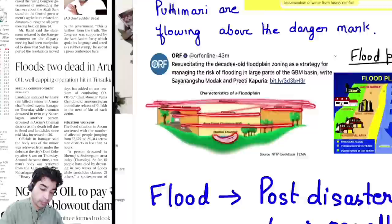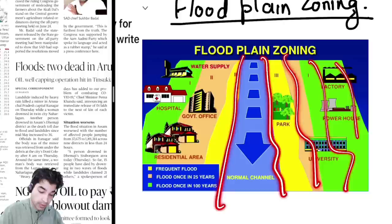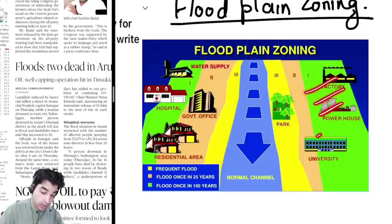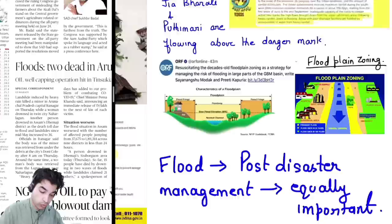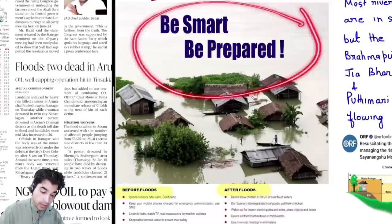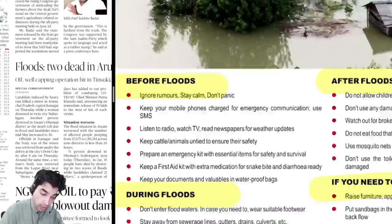The flood plain consists of the normal channel, base flood elevation, the floodway, and the flood fringe — all together forming the flood plain. Flood plain zoning is very important so that development is done accordingly in a planned way. The area near the normal channel should have parks, while universities, factories, and power houses should be at a greater distance — this is flood plain zoning. In disaster management, three things are important: pre-disaster, during disaster, and post-disaster.